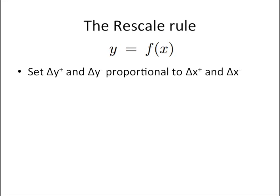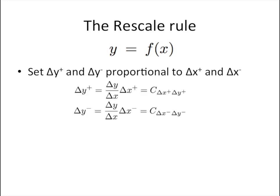Let's talk about the rescale rule. This rule sets delta_y_plus and delta_y_minus proportional to delta_x_plus and delta_x_minus. That is, it sets delta_y_plus equal to the ratio of delta_y divided by delta_x multiplied by delta_x_plus, and similarly for delta_y_minus. We assume all contribution to delta_y_plus comes from delta_x_plus and all contribution to delta_y_minus comes from delta_x_minus, which leads the multipliers to simply be the ratio delta_y divided by delta_x. As mentioned, the multipliers are the same for the positive and negative terms.